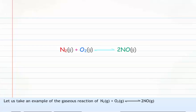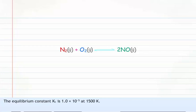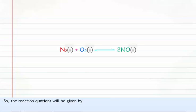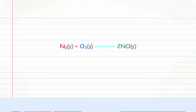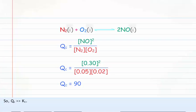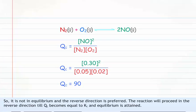Let us take an example of the gaseous reaction N2 plus O2 reversibly giving 2NO. The equilibrium constant KC is 1.0 into 10 raised to minus 5 at 1500 Kelvin. Suppose the molar concentrations are: N2 equals 0.05 M, O2 equals 0.02 M, NO equals 0.30 M. The reaction quotient QC equals concentration of NO squared divided by concentration of N2 into concentration of O2, which equals 0.30 squared divided by 0.05 into 0.02, which equals 90. So QC is much greater than KC; it is not at equilibrium and the reverse direction is preferred. The reaction will proceed in the reverse direction until QC becomes equal to KC and equilibrium is attained.